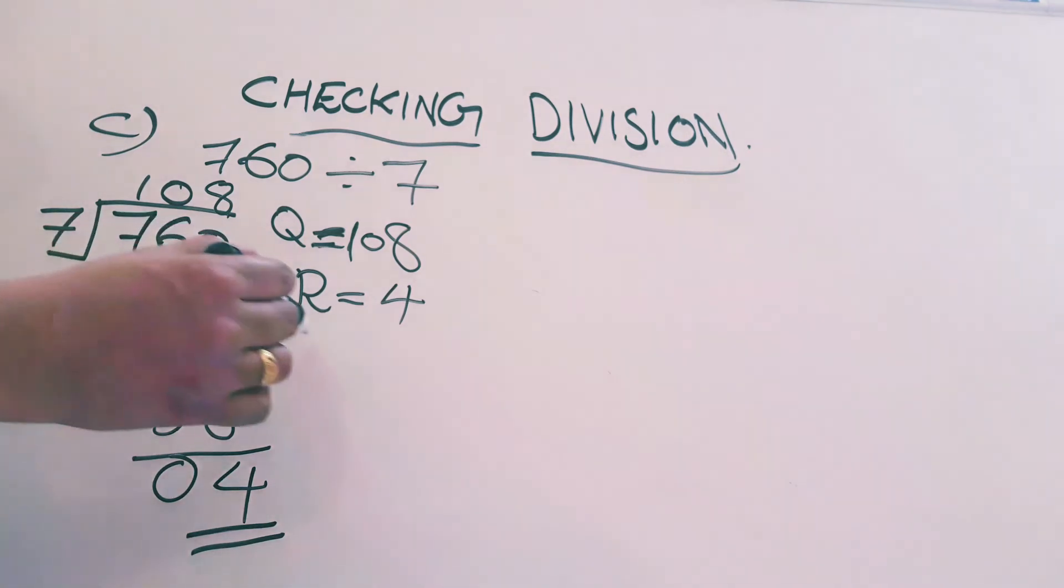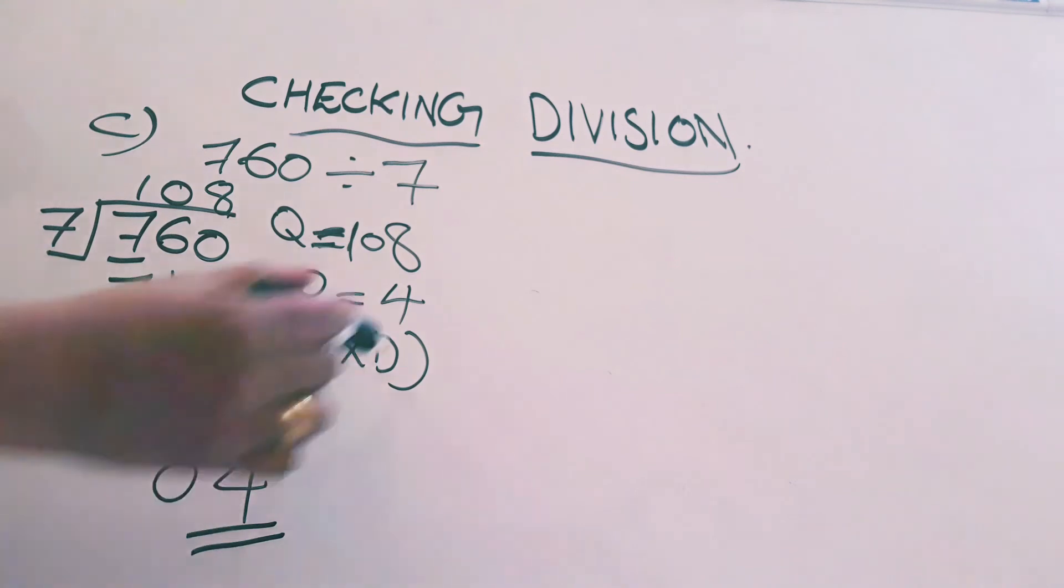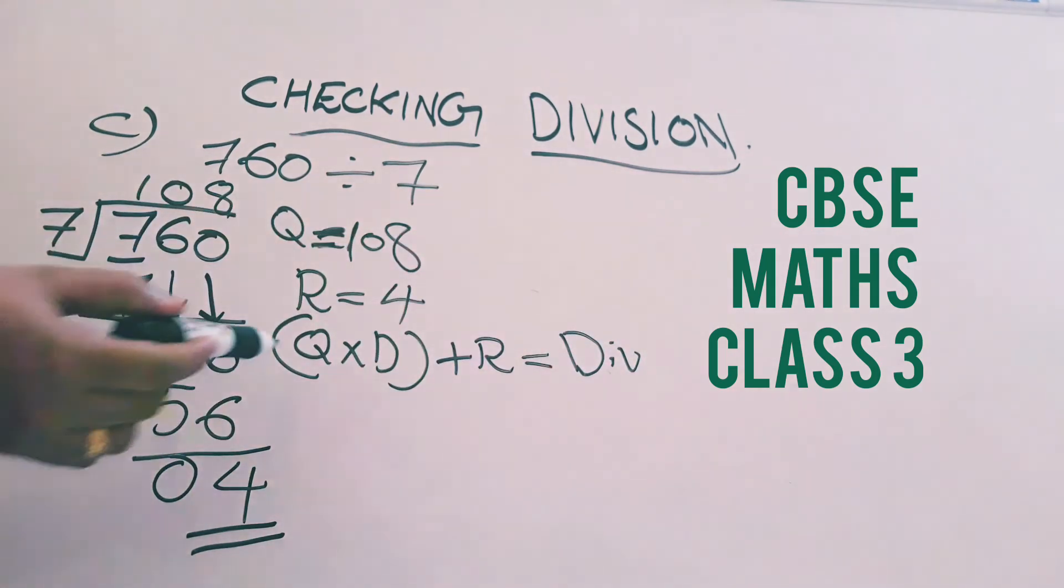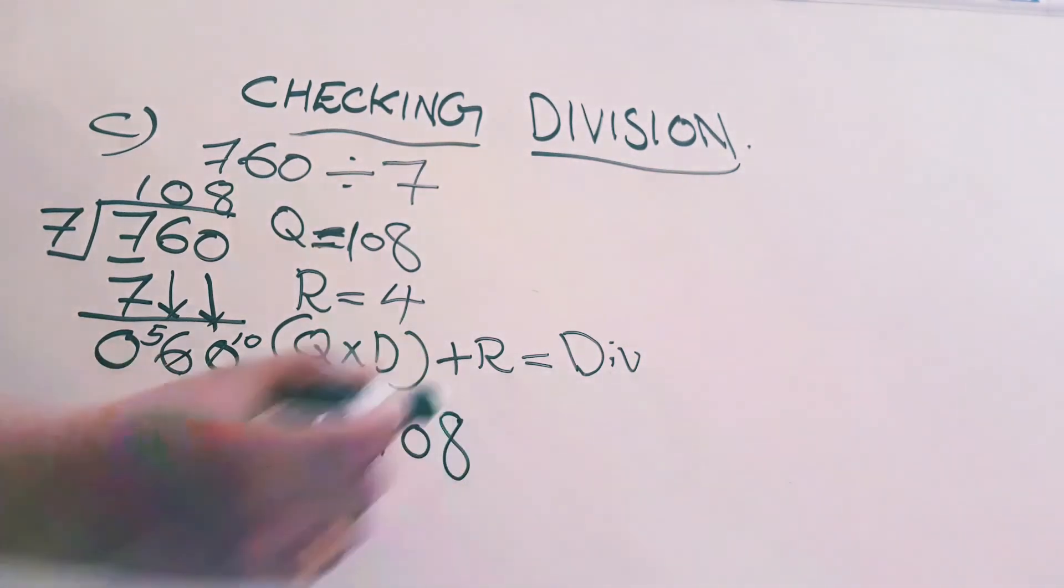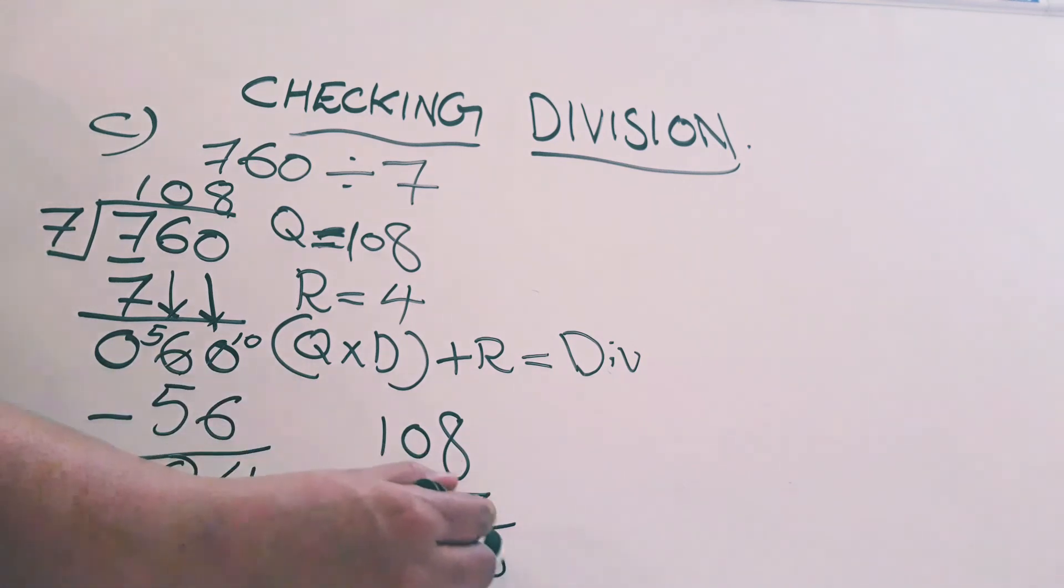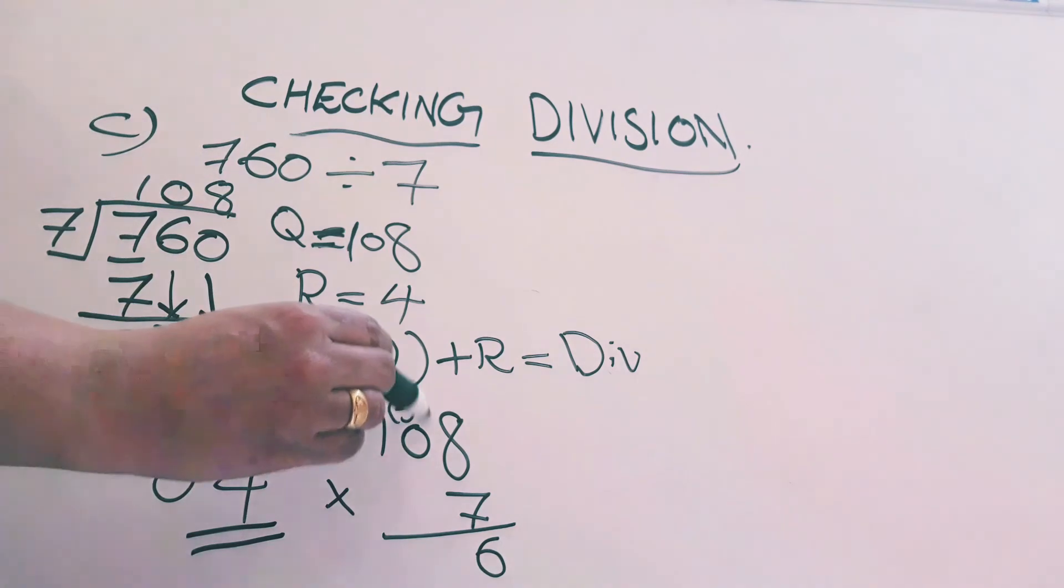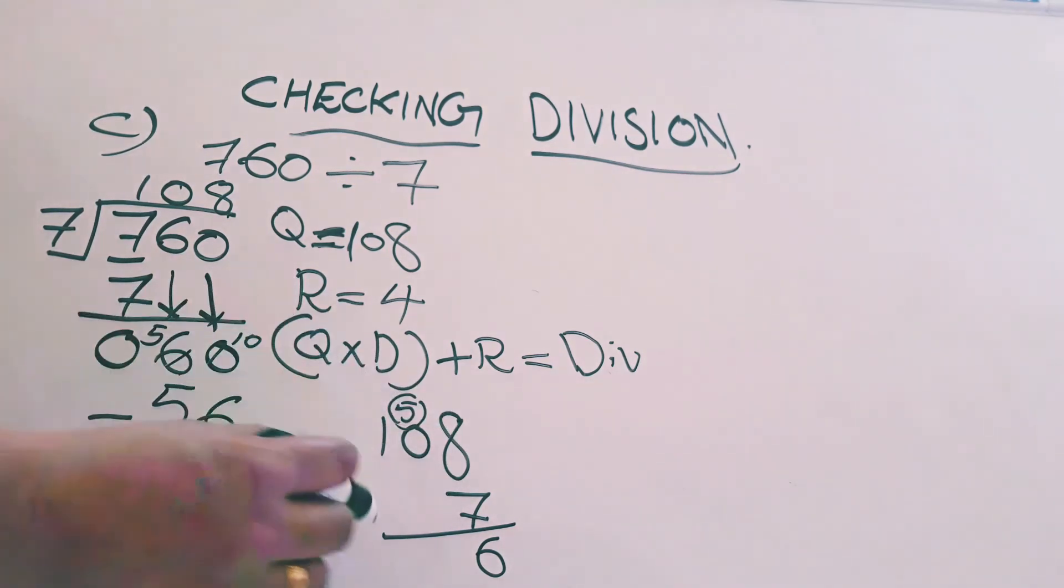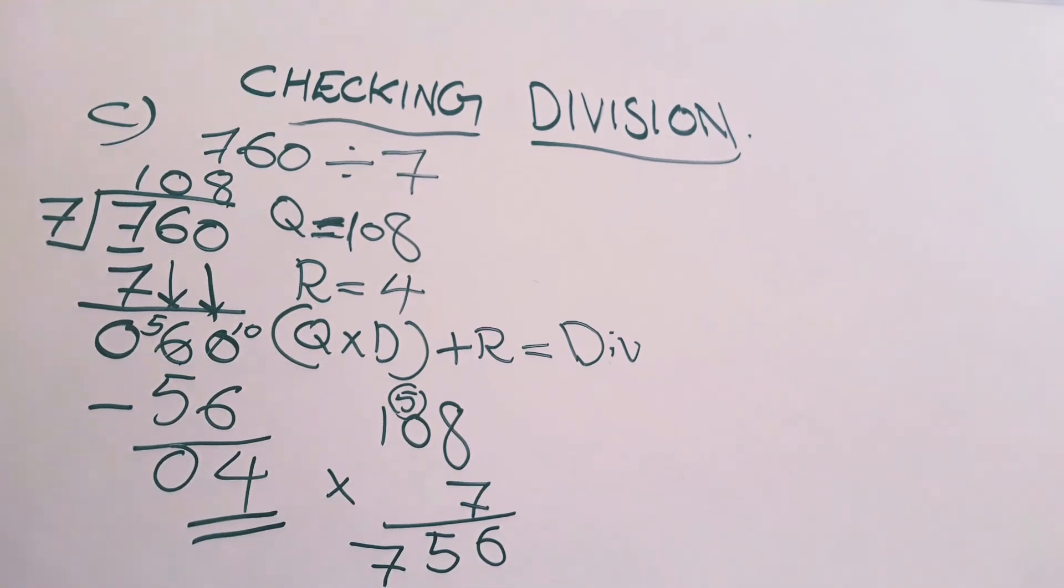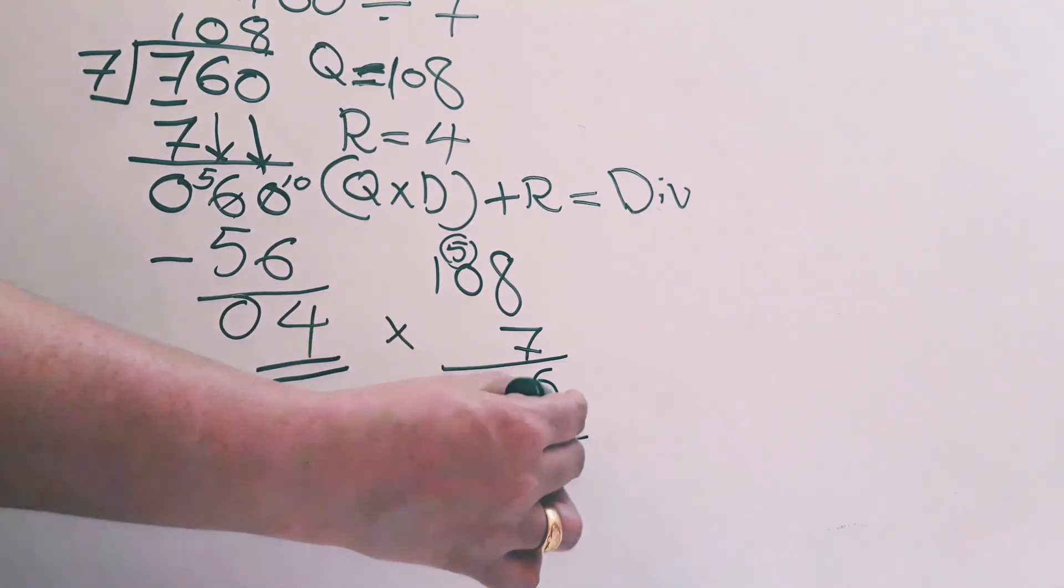Now checking we have to do. Q into D plus R is equal to dividend. Q is 108. 108 into 7. Divisor is 7. Do multiplication. 7 eights are 56. Write 6, 5 you have to carry here. 0 into 7 is 0. 0 plus 5 is 5. 1 into 7 is 7. 756. Our sum is not over. We have to add 4 with this. 756 plus 4.